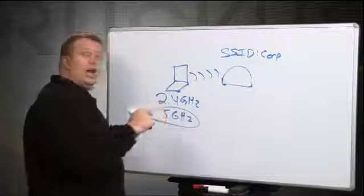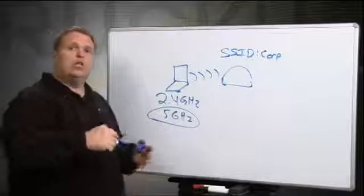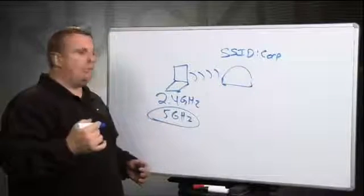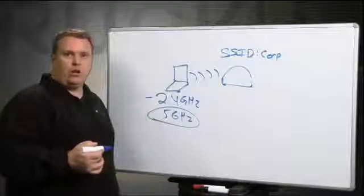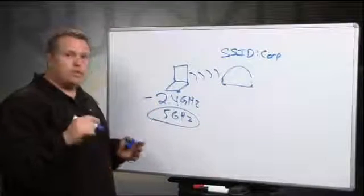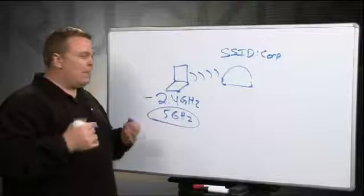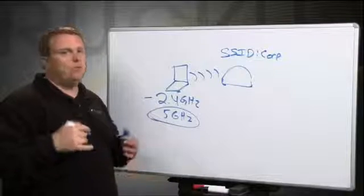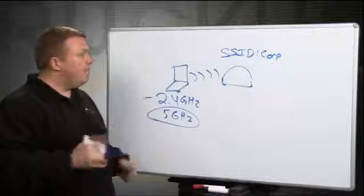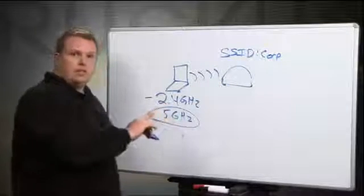The normal client that goes through listening for beacons or sending out probe requests, they tend to always favor 2.4 GHz because the signal strengths are typically a little bit stronger. Client devices tend to like lots of signals. So they always kind of run home to 2.4 GHz, when really they shouldn't do that. So what happens inside the Ruckus system?